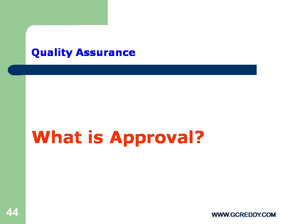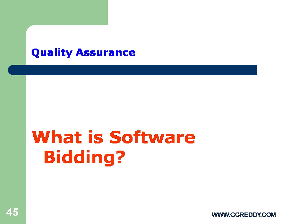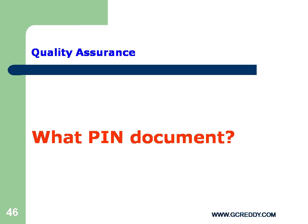What is Software Bidding? A proposal to develop new software is called Software Bidding. What is a PIN document? Product Initiation Note — a PIN document is prepared to estimate required technologies, required time, and resources for developing new software.